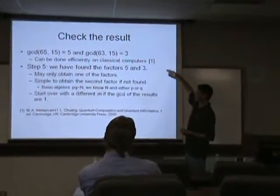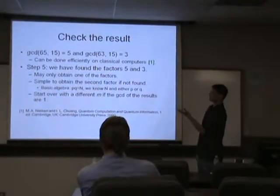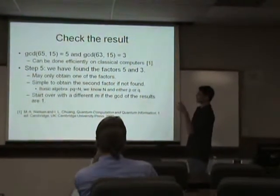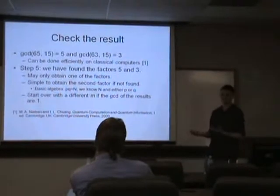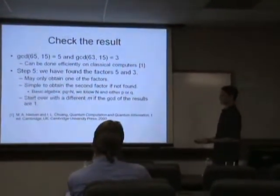And the greatest common denominator can be done on the classical computer efficiently. So then from the results here, we get 5 and 3. In this case, since we selected an N that we know would work, we've found the factors.